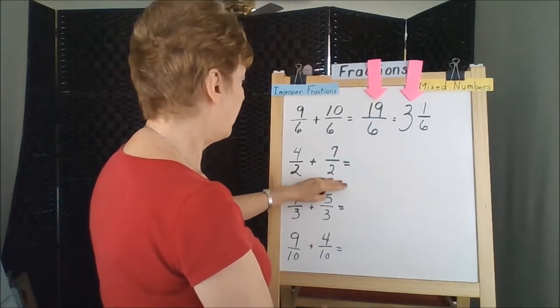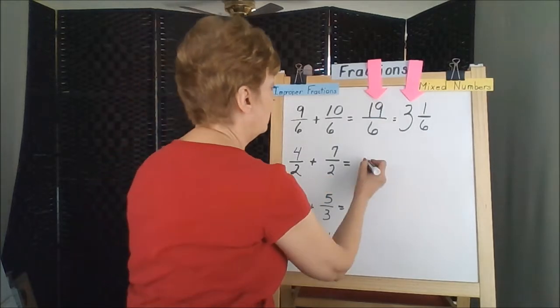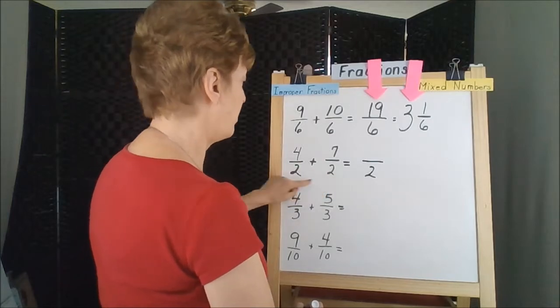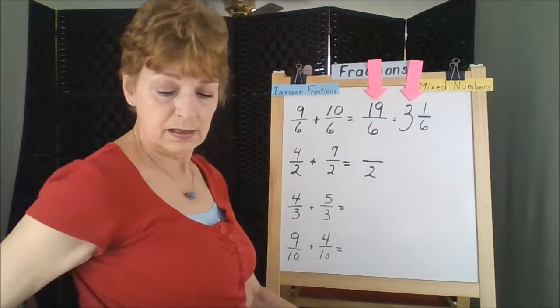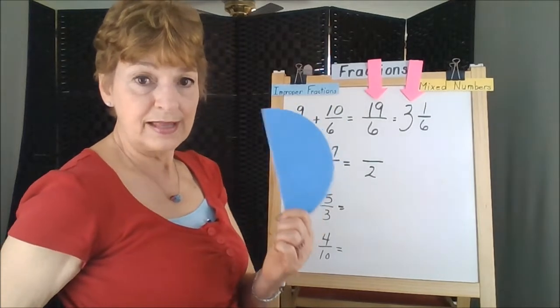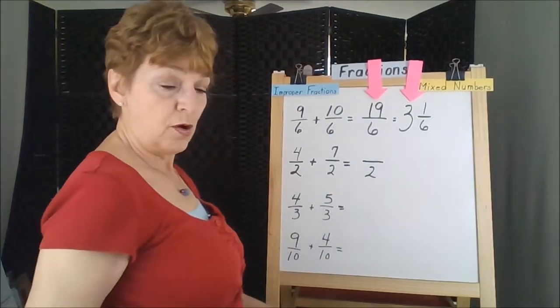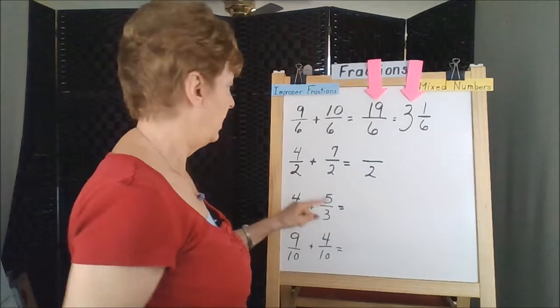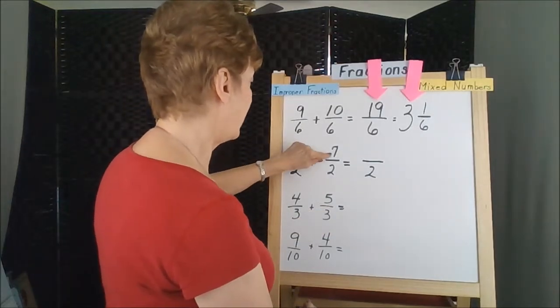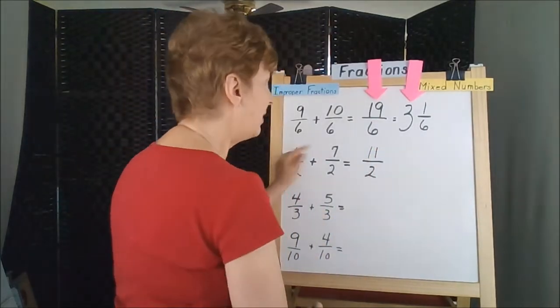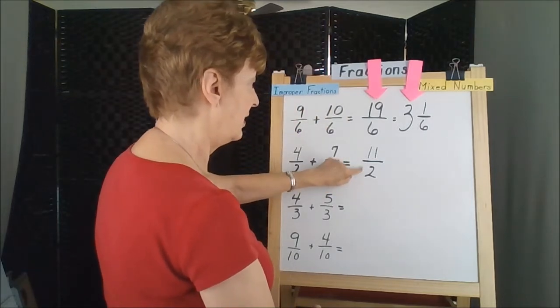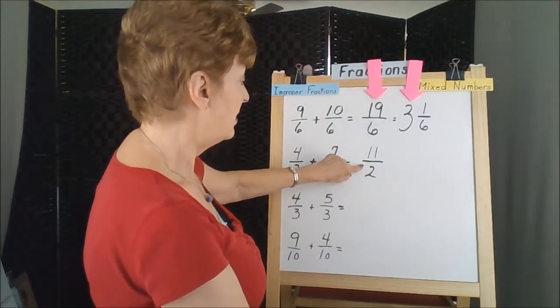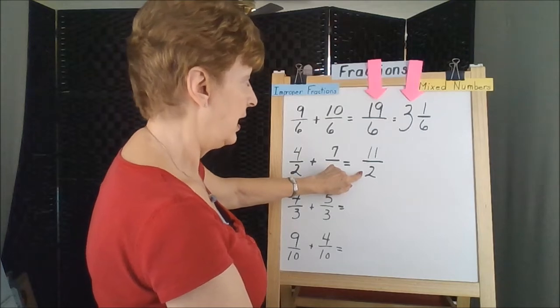Next problem: the denominators have to be the same. They are, so we're just going to pull over the 2 to represent the size of the piece. These would be halves. That's the size of the piece. We have four of these halves and we're going to add seven more. So 4 plus 7 is 11. That makes an improper fraction. 11 is bigger than the 2, so we can divide this 11 by 2.